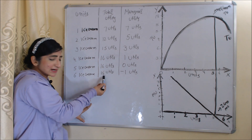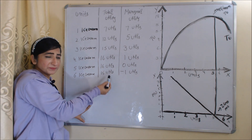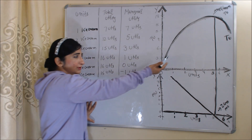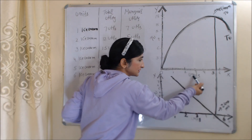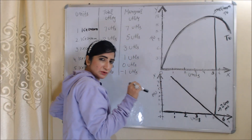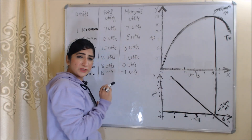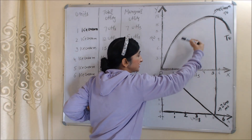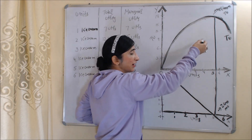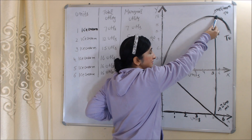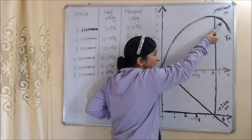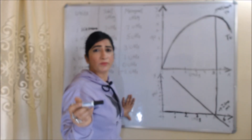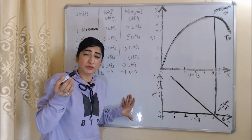If you convert this table into a diagram, on the x-axis we have units of ice cream and on the y-axis we have total utility. Initially total utility is increasing, after a certain point it becomes maximum, and finally it starts reducing.